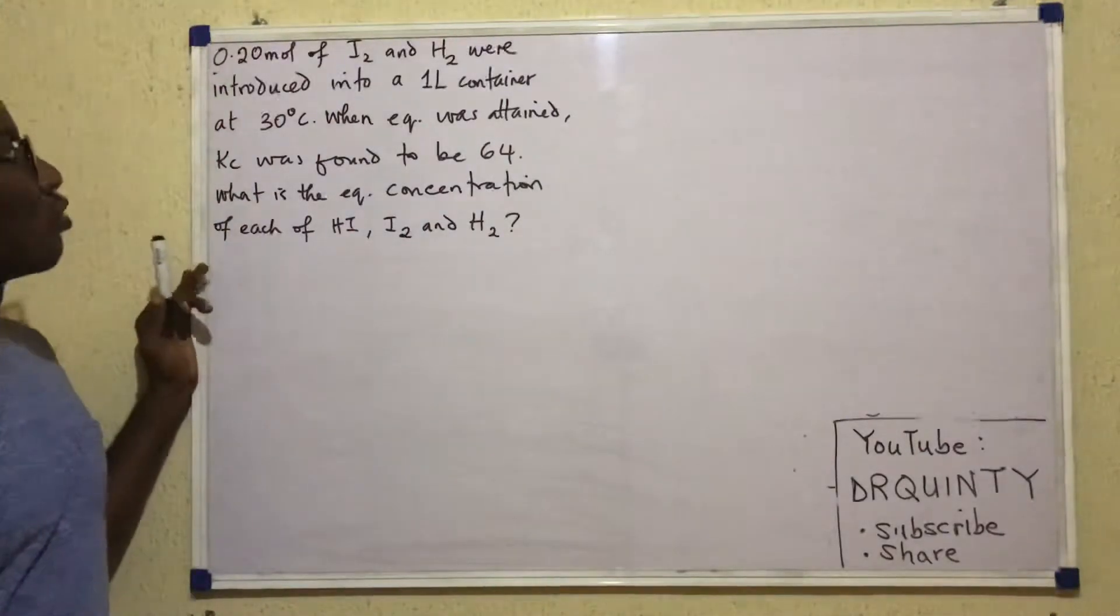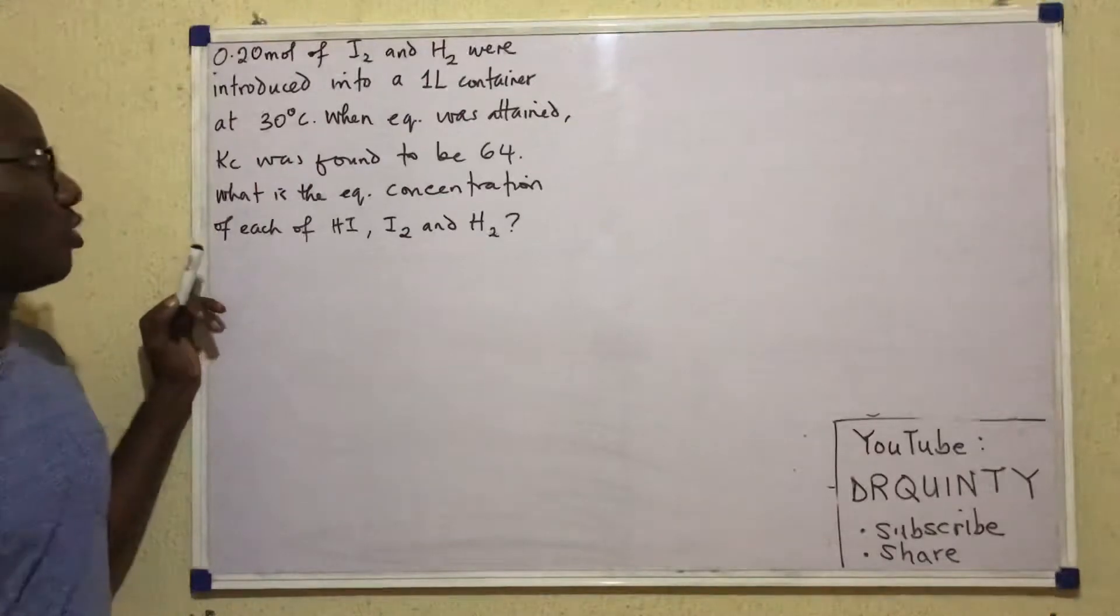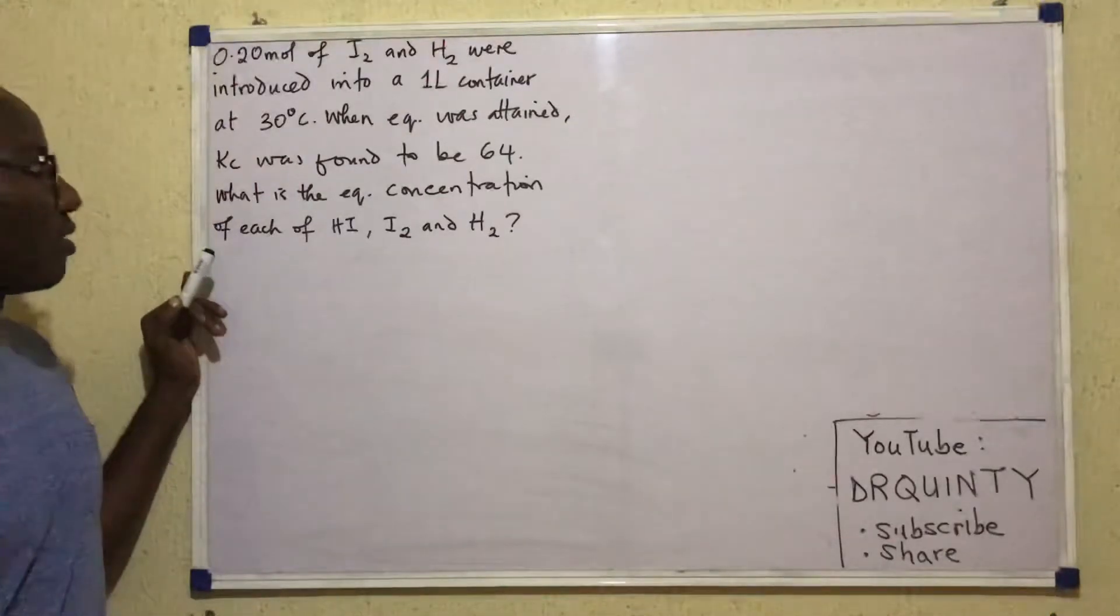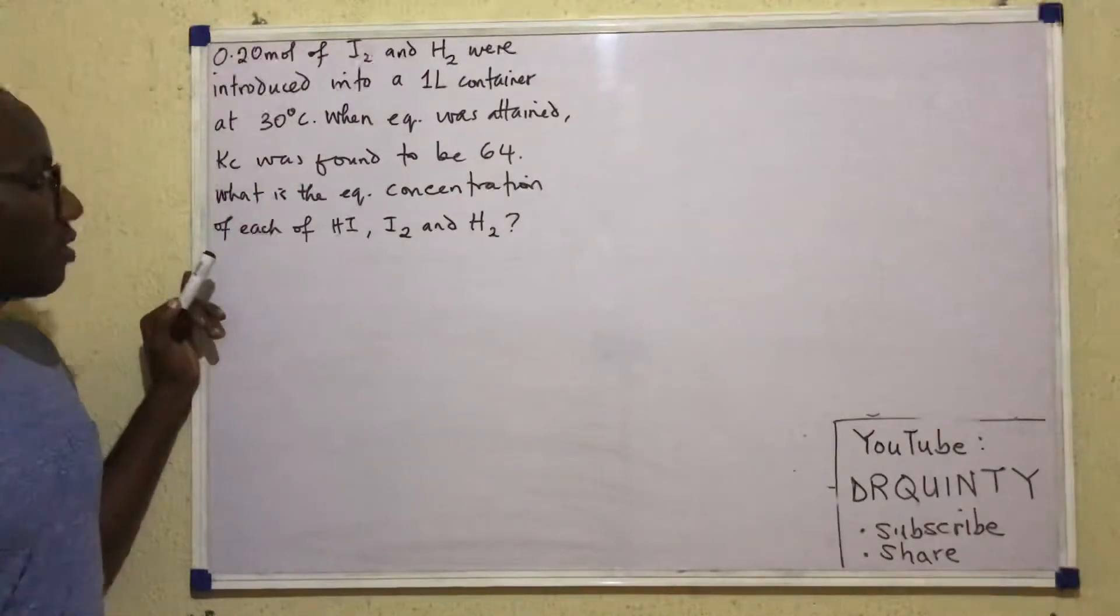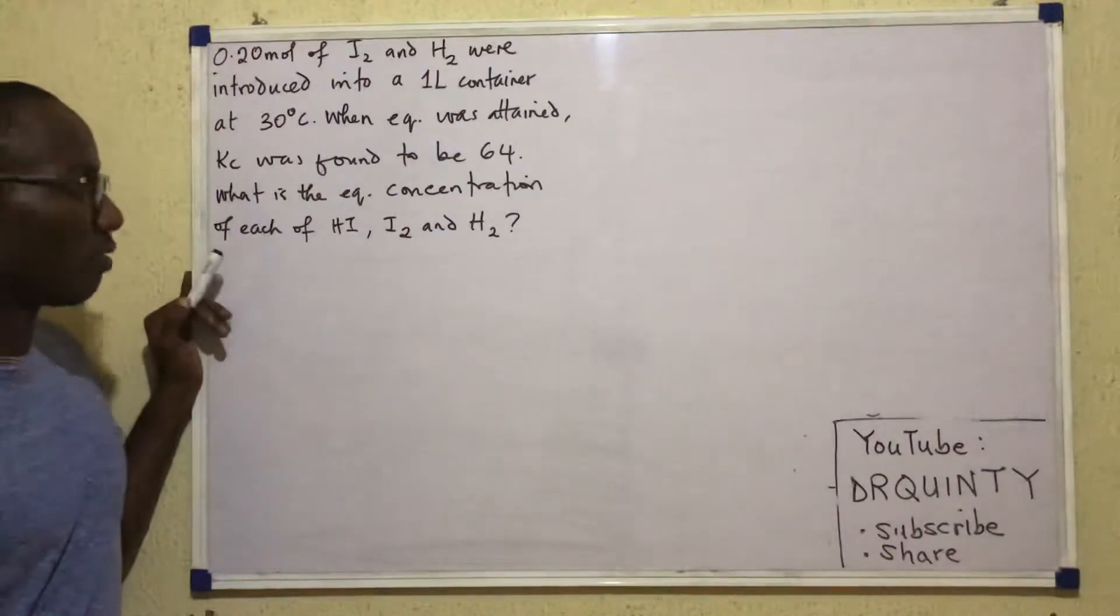It says 0.2 moles of iodine and hydrogen were introduced into a 1 liter container at 30 degrees Celsius. When equilibrium was attained,